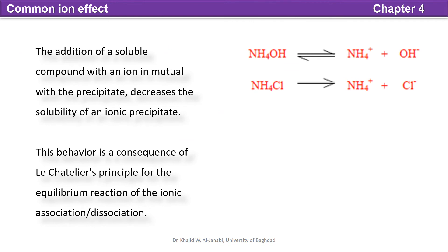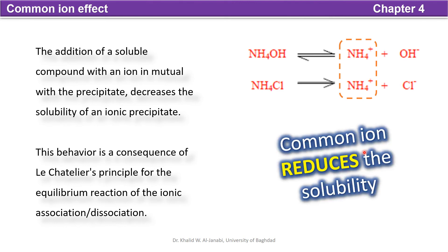Common ion effect: The addition of a soluble compound with a mutual ion, like the ammonium ion here, will decrease the solubility of a precipitate. This is the mutual ion. So common ion effect reduces the solubility if we have common ions. This will reduce the solubility of the salts.